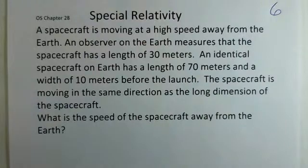The model of spacecraft being used has a twin, the same model on earth that's 70 meters long. Before this moving spacecraft left the earth it was 70 meters long and had a width of 10 meters. The spacecraft is moving in the direction of the long axis of the spacecraft, so this is a length contraction problem.